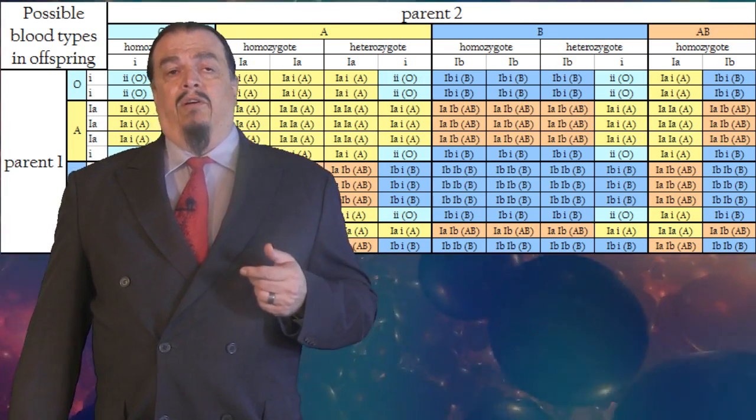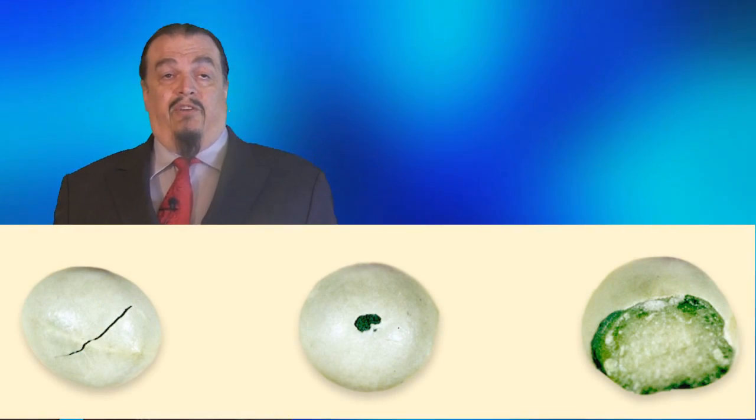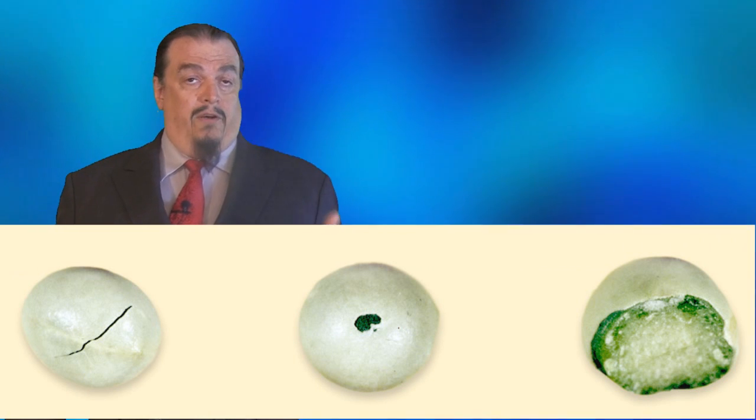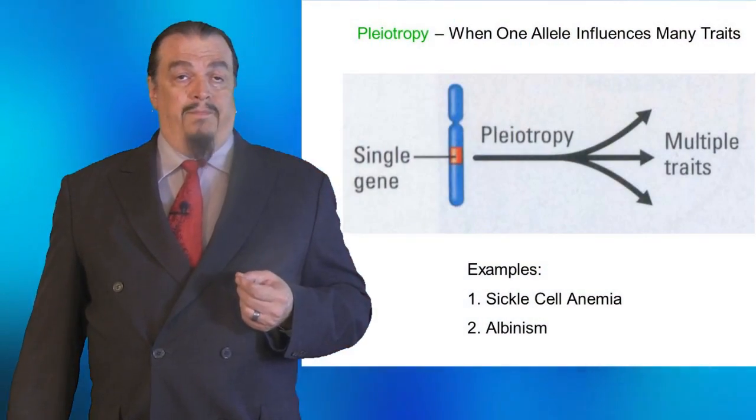Moving along. As we said earlier, blood type is determined by just one gene. But genetics is more complicated than that. Although Mendel studied more simple traits, even he noticed that genetics are not that simple. It seems we said goodbye to pea plants just a smidgen too early. Mendel noticed that pea plants with white flowers had white seed coats and that was different from other flower colors. He inferred, correctly, that one gene can have an effect on more than one trait.